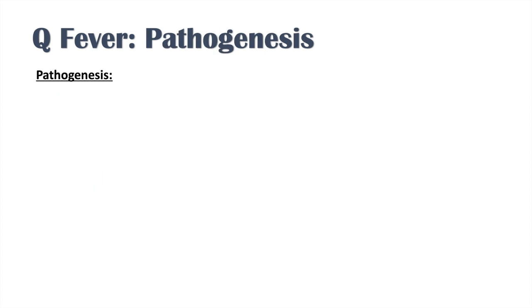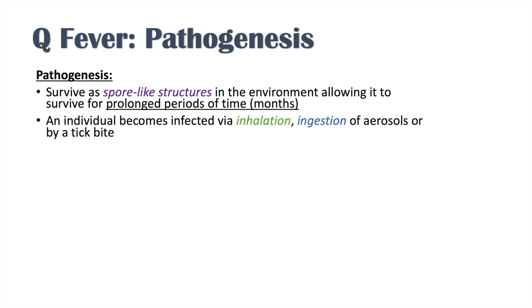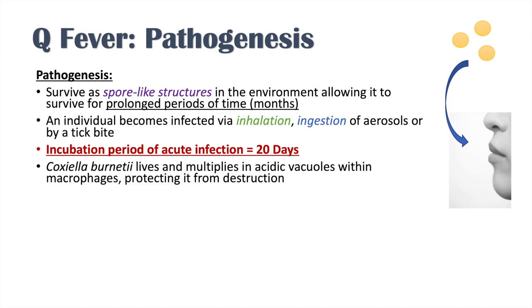The pathogenesis of Q fever is as follows. The bacteria survive as a spore-like structure in the environment, allowing it to survive for prolonged periods — often months in soil and grass — and it can be infective during this time. An individual becomes infected via inhalation, ingestion of aerosols, tick bite, or ingestion of raw milk or cheese. There is then a long variable incubation period of 9 to 40 days, but on average about 20 days.